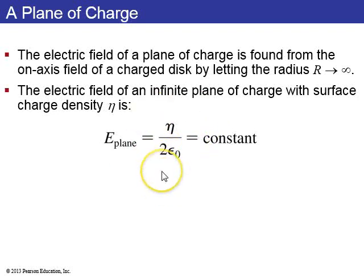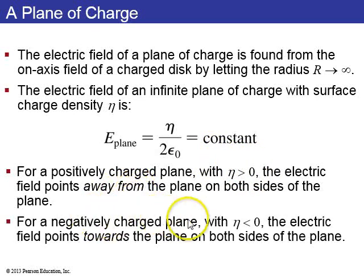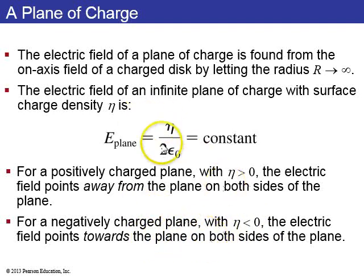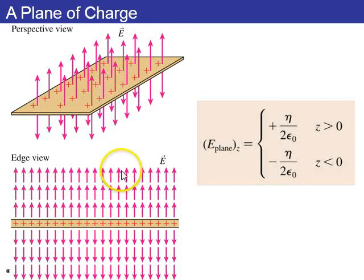So the electric field due to an infinite plane is eta over 2 epsilon naught, which has no z-dependence — a constant field independent of distance. For a positively charged plane, the field points away from the plane on both sides; for a negative plane, it points toward the plane on both sides. This is illustrated in both perspective and edge views.